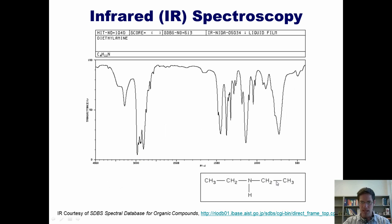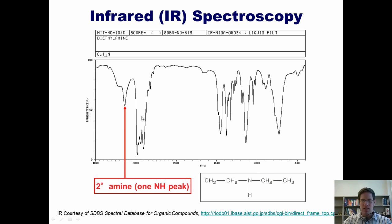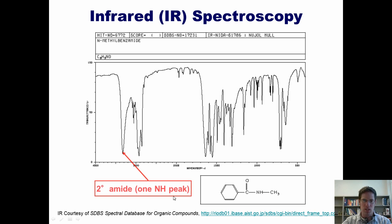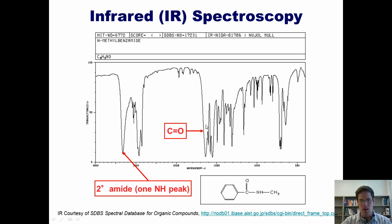Here's an IR of a secondary amine, which gives only one NH stretch. This compound doesn't have any carbonyls, and the other peaks are caused by CH stretches from the alkyl chains. Here's a secondary amide — there's only one hydrogen on the nitrogen, so we see one peak in the nitrogen-hydrogen bond stretch region. This compound has a carbonyl, so in contrast to the previous slide, we see the carbonyl stretch right around 1700 plus or minus 50.